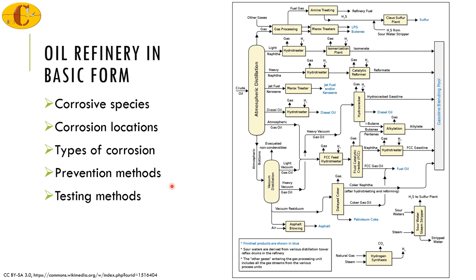The next is prevention methods. Prevention methods would mean that the type of coatings or cathodic protection methods or corrosion inhibitors used would change, and we may try to see that these are the methods which have been used and go back to the reason why those have been selected. The next is testing methods. Testing methods, as I mentioned in the previous slide, may be different for each part, and the most easiest way is to really just go and see what testing methods have been used and redo them to verify it.